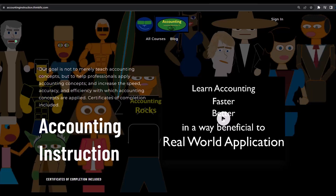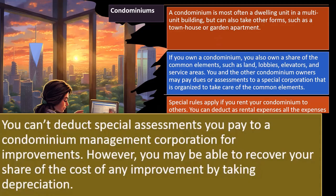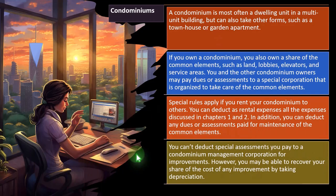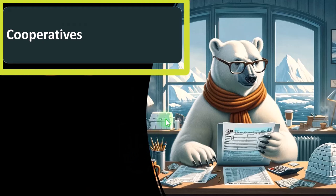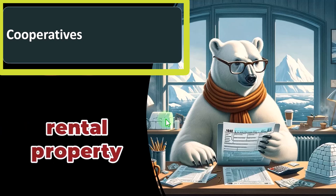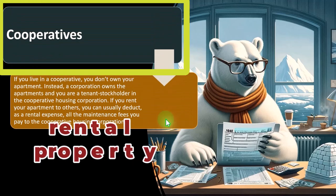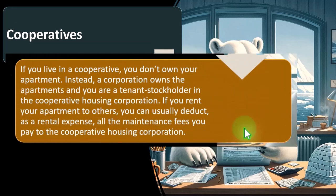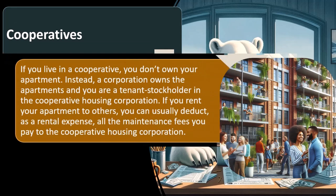You may be able to recover your share of the cost of improvements by taking depreciation. Now let's talk about cooperatives, which is another somewhat unusual structure. Our baseline case is a separate rental property that is completely rental property, versus the setup for a cooperative. We'll go through this relatively quickly because it's not as common a scenario, but it's a good example of how different entity structures can lead to complications with taxes.